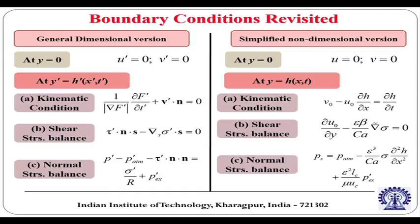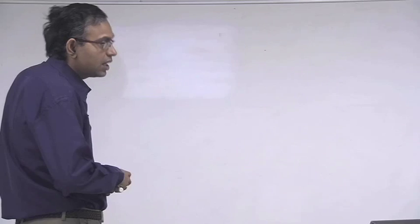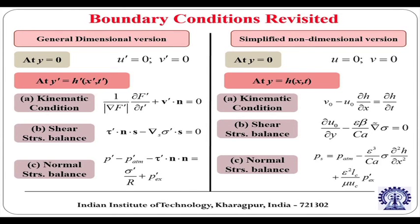The kinematic boundary condition at the interface is given in dimensional form and dimensionless form. The shear stress balance is given in dimensional form and dimensionless form, expressed in terms of capillary number. The normal stress balance is also given in both dimensional and dimensionless form. To help recapitulate how to recover the dimensionless form from the dimensional form, we will take up the normal stress boundary condition as an example.